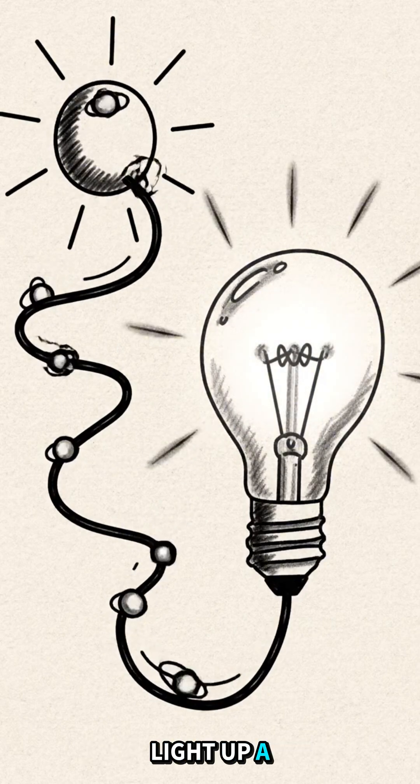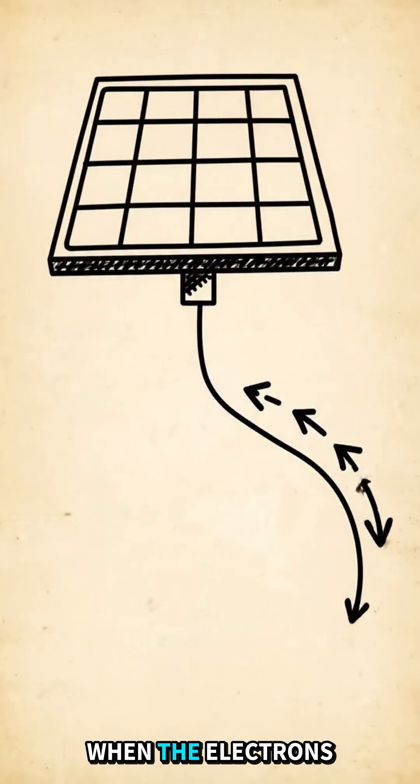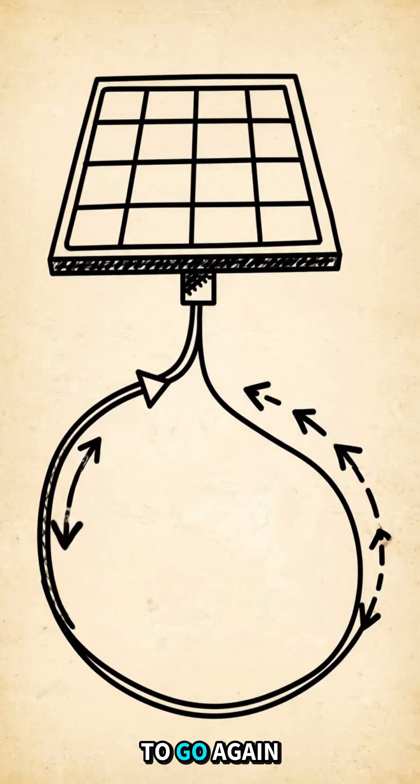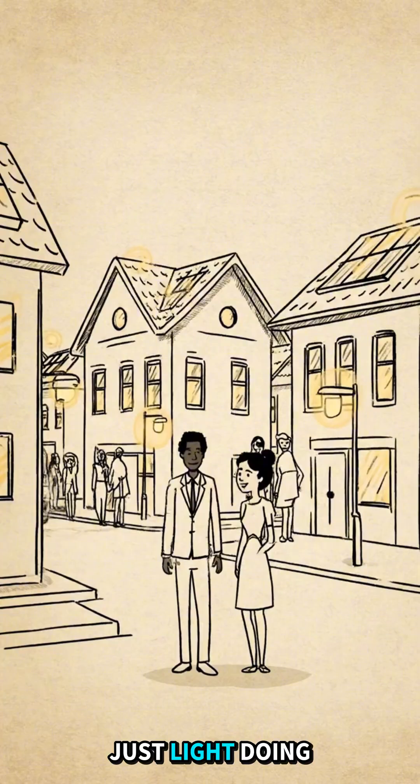That current can light up a bulb, charge a phone, or power a house. When the electrons finish their loop, they return to the panel, ready to go again. No fuel burned, no moving parts, just light doing the work.